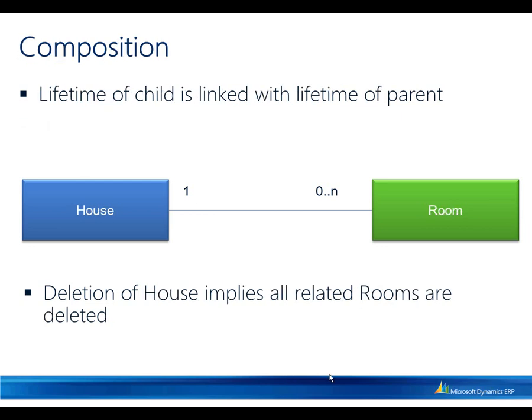And finally, when there is a strong link between the lifetime of two entities, then that type of relation can be thought of as composition. In this example, a house can have many rooms. However, deletion of a house automatically implies that all associated rooms need to be deleted from the system. This type of relation can be modeled by choosing composition in the property.